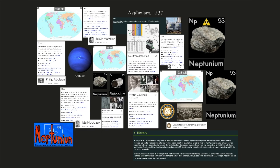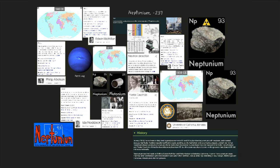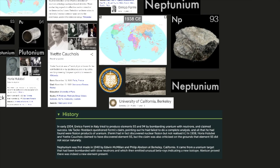Neptunium is a radioactive metal. Neptunium is little used outside research. The isotope neptunium-237 has been used in neutron detectors. In early 1934, Enrico Fermi in Italy tried to produce elements 93 and 94 by bombarding uranium with neutrons and claimed success. Ida Noddack questioned Fermi's claim, pointing out he had failed to do a complete analysis, and all that he had found were fission products of uranium.